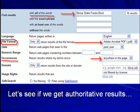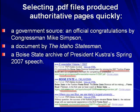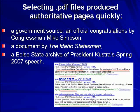Let's see if we get authoritative results by selecting only PDF files. Take a few moments to scan Google's top three results. Selecting PDF files produced authoritative pages quickly. The first hit is a government source and official congratulations by Congressman Mike Simpson. The second hit is a document by the Idaho Statesman. And the third is a Boise State Archive of President Castro's spring 2007 speech.